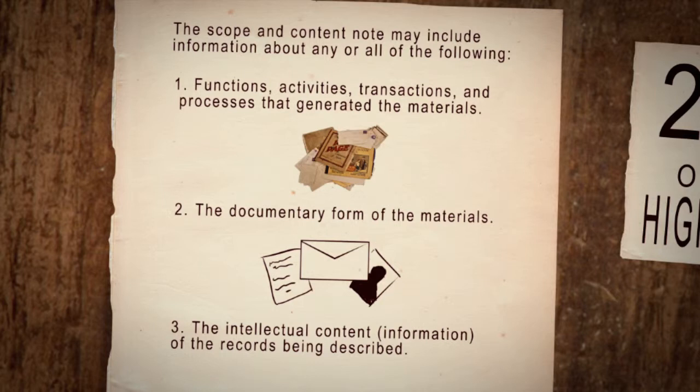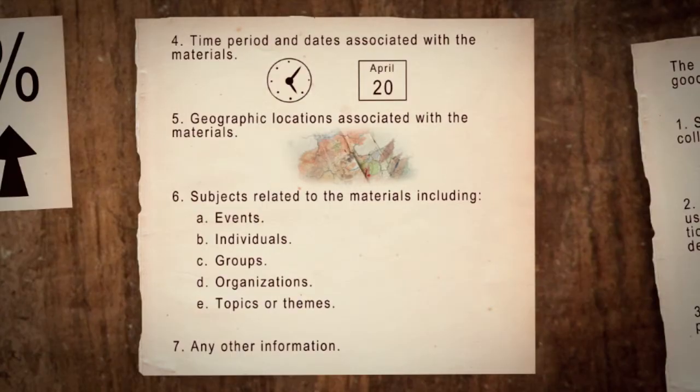The intellectual content of the records being described. Time period and dates associated with the materials. Geographic locations associated with the materials. Subjects related to the materials, including events, individuals, groups, organizations, topics, or themes. Any other information that you feel would help the researcher make an informed decision about using the collection.